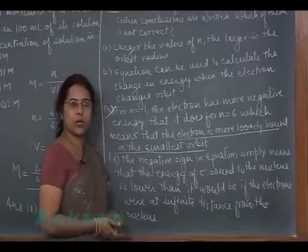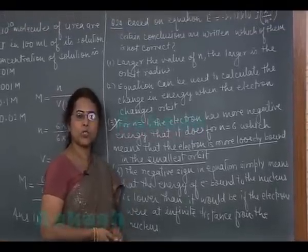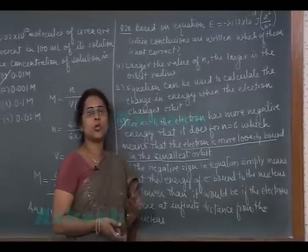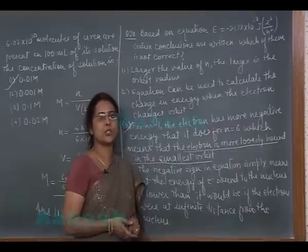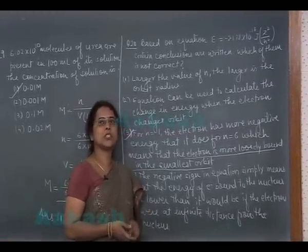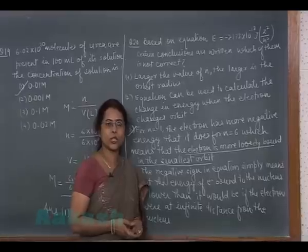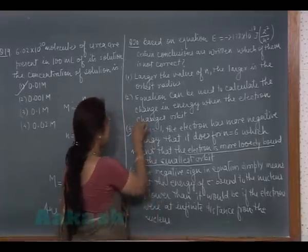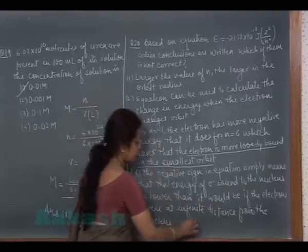This statement is correct because when an electron is present at infinity, there is no attraction, no repulsion. So energy of electron is zero. But when an electron enters into the atom, there is electrostatic force of attraction due to which its energy decreases. It means the correct answer is option number 3.